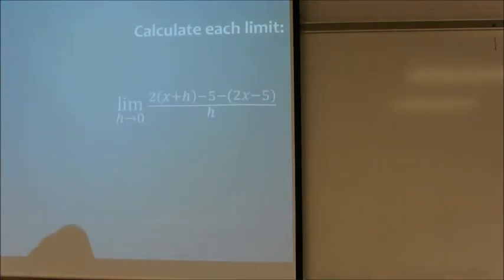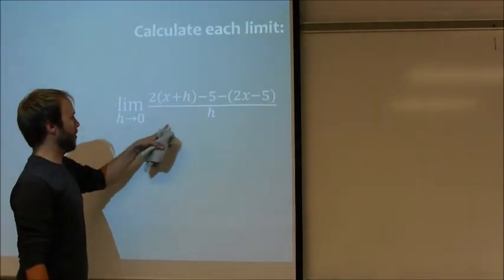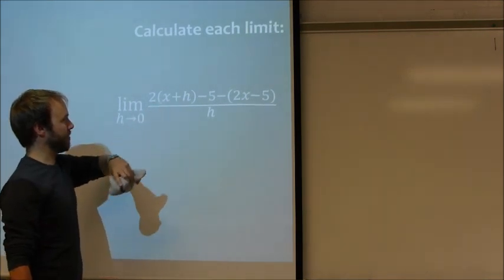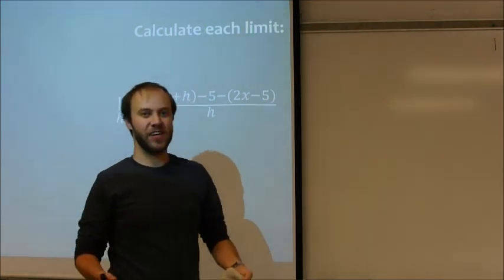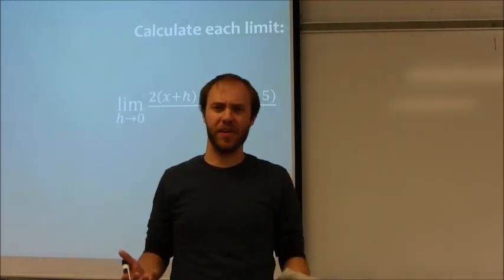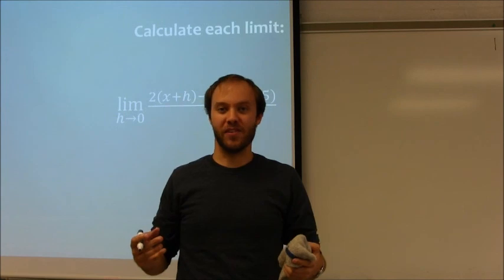Moving along. Next example here. What the limit is h approaches 0 of 2 times the quantity x plus h minus 5, minus 2x minus 5, all over h. Again, there are a lot of values here. We've got a lot of like terms. We've got some parentheses. The first thing I need to do here is simplify. That's going to be very, very important.